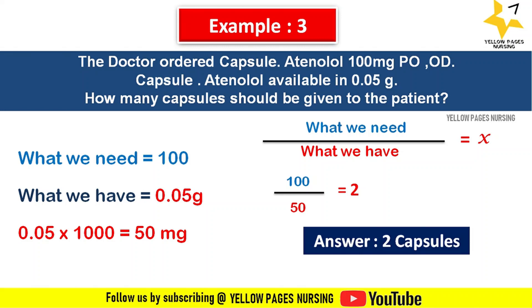The key point to remember here is that the order is given in milligrams and the available dose is in grams, so we need to convert grams to milligrams by multiplying by 1000. The next example: Doctor orders tablet enalapril maleate 7.5 milligram per oral OD.